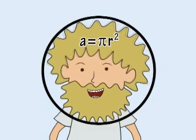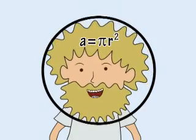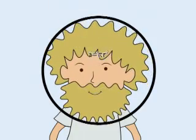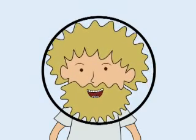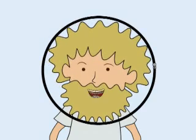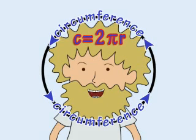And pi r squared, pi r squared, is the area inside there. If you travel round the circumference, 2 pi r gives the total distance.